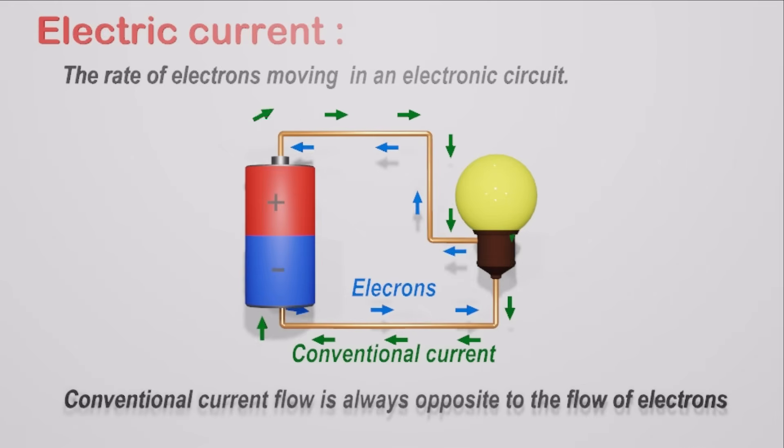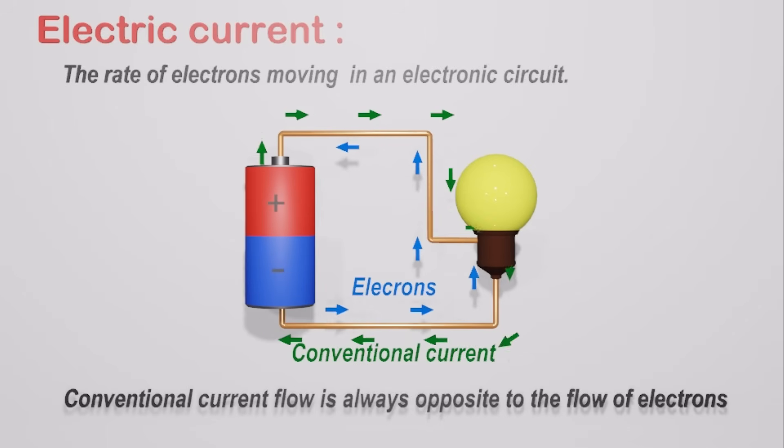In fact, it makes no difference which way current is flowing as long as it is used consistently. The direction of current flow does not affect what the current does. Throughout this video we use the term current for the conventional current.